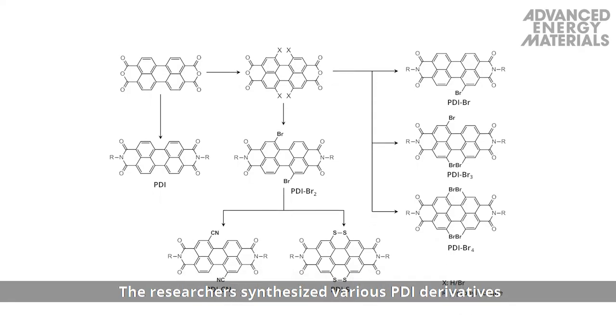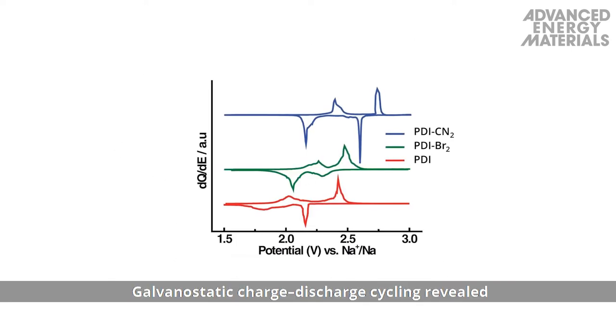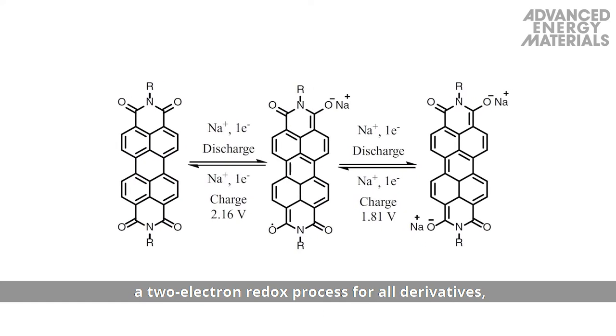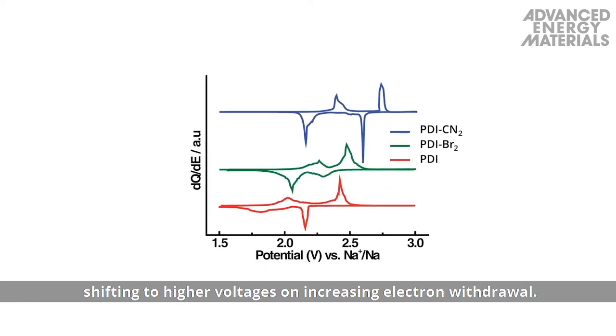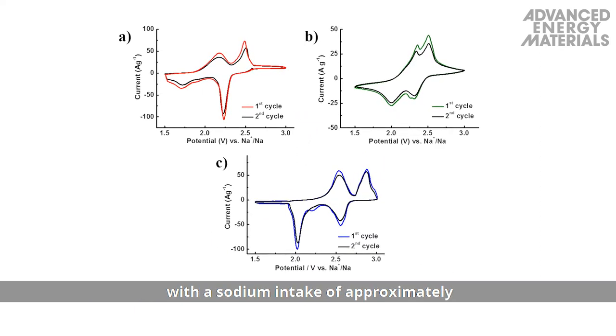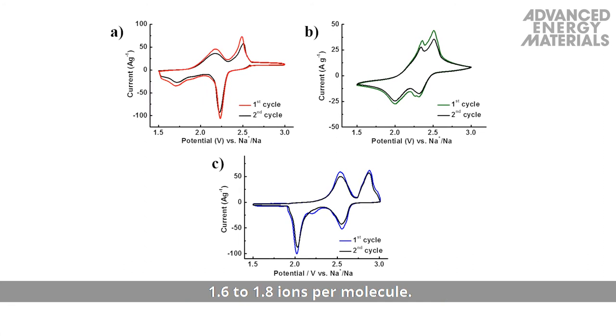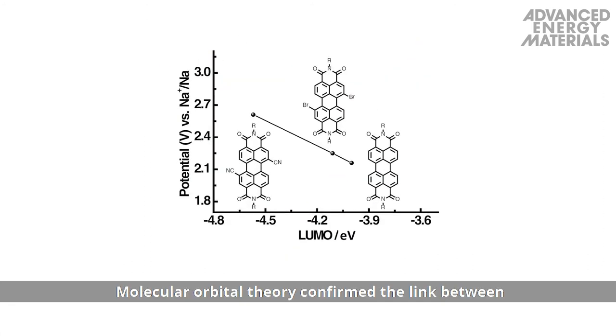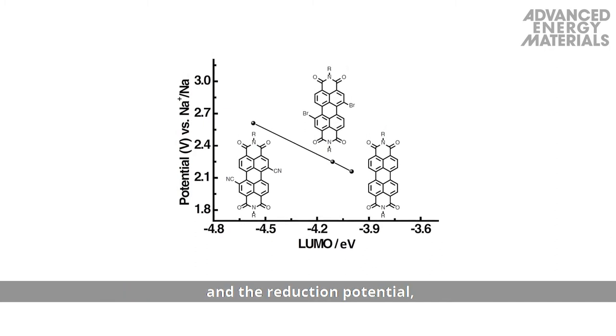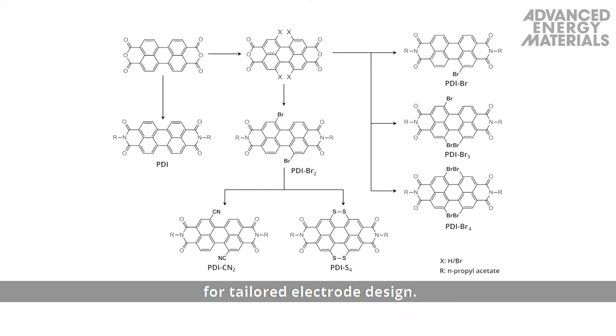The researchers synthesized various PDI derivatives with different electron withdrawing substituents. Galvanostatic charge-discharge cycling revealed a two-electron redox process for all derivatives, shifting to higher voltages on increasing electron withdrawal. Reversible ingress of sodium ions was observed with a sodium intake of approximately 1.6 to 1.8 ions per molecule. Molecular orbital theory confirmed the link between the electron withdrawing ability of the substituents and the reduction potential, affirming the flexibility of organic molecules for tailored electrode design.